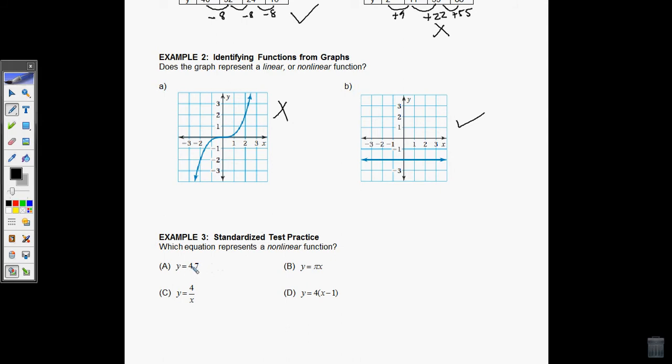Well, A looks like it already is. It's just a horizontal line at 4.7. B, y equals mx, where m just happens to be pi. So the y-intercept here is plus zero, so there's no y-intercept. Let's see, D, y equals, and then I basically just have to distribute 4x minus 4. So it's a slope of 4 and a y-intercept of negative 4. That's linear.